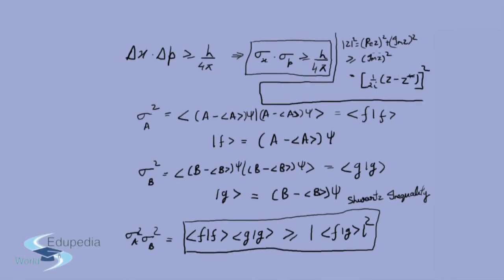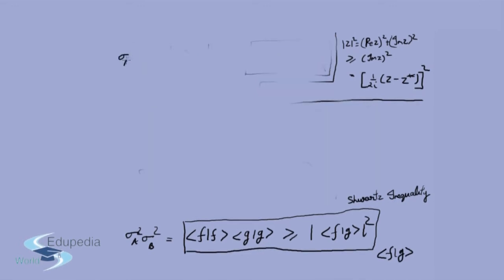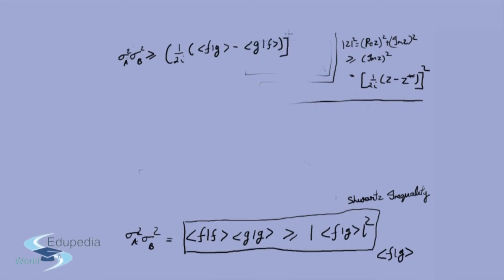We apply this inequality to the inner product ⟨F|G⟩. So what we get is: sigma A squared times sigma B squared is greater than or equal to mod of ⟨F|G⟩ squared, which is in turn greater than or equal to one over 2i times (⟨F|G⟩ minus its complex conjugate ⟨G|F⟩), all squared.